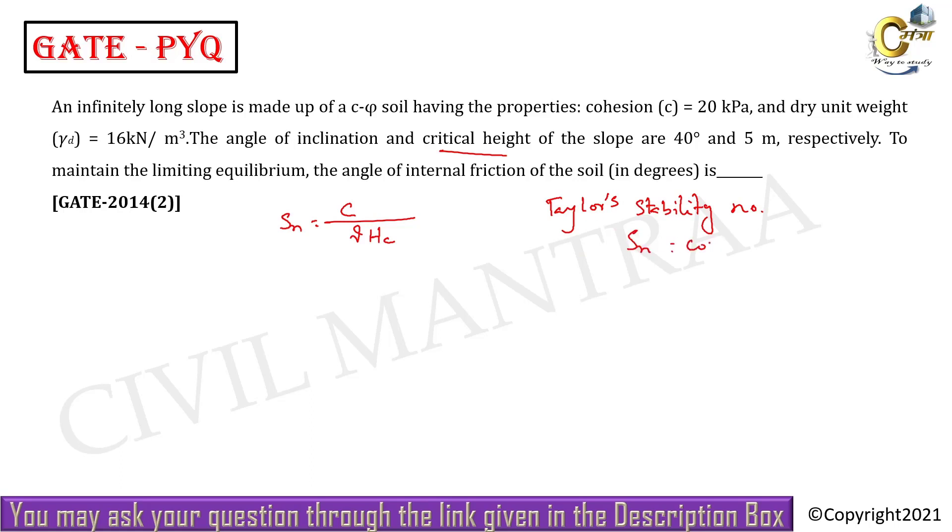The formula for Taylor stability number Sn is: cos²β × tanβ/(tanβ - tanφ). This is the formula of Sn. So if I write here cos²β...